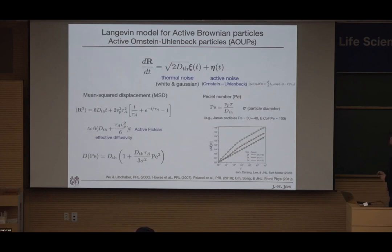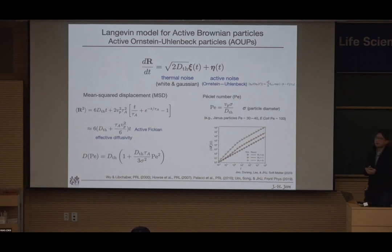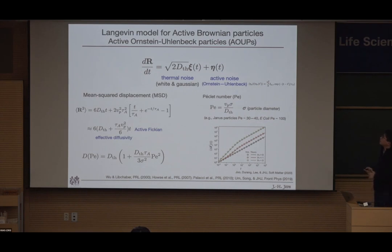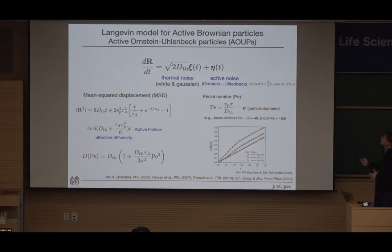So that's the active Brownian particle. How can we model this system? As mentioned earlier, in principle you can model this with rotational and translational motion, but this is very difficult. Many people in this field prefer using the so-called Active Ornstein-Uhlenbeck Particle, or AOUP.